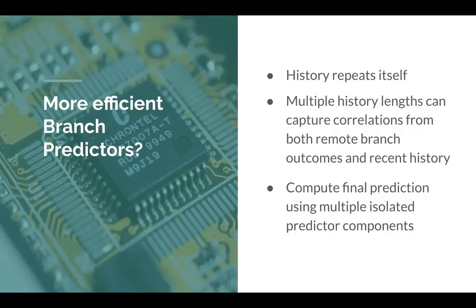How can we make more efficient branch predictors? Branches often repeat their outcomes and therefore the history of a branch repeats itself. If we use multiple history lengths of a branch, we can capture correlations from both remote branch outcomes and the recent history of the branch, and using this we can compute the final prediction of a branch outcome using multiple isolated predictor components.